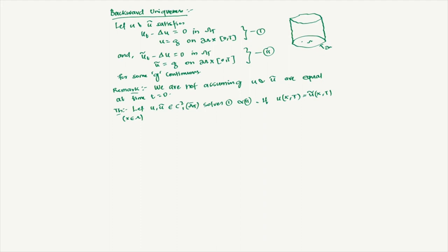There is nothing special about this capital T; it can be any time t1 in the interval. So if u and u-tilde agree at any time t1 in (0,T), and they share the same boundary values on del omega for all time in (0,T), then u is identically equal to u-tilde in omega_T.